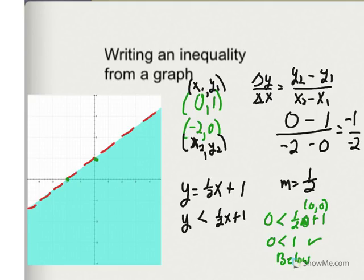Okay, here's the solution. I found the slope was positive 1 half. I know it goes through the y-intercept of (0, 1). I checked a point just to make sure that my inequality was correct — (0, 0) — to see that I am shading below the line. And I also made sure that the line was dotted by not drawing a line under the inequality sign, so it's just less than.